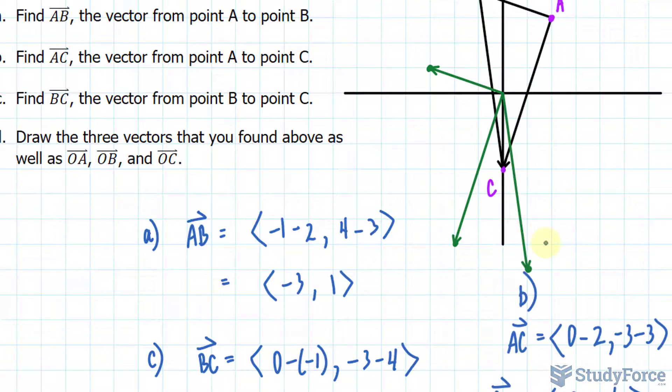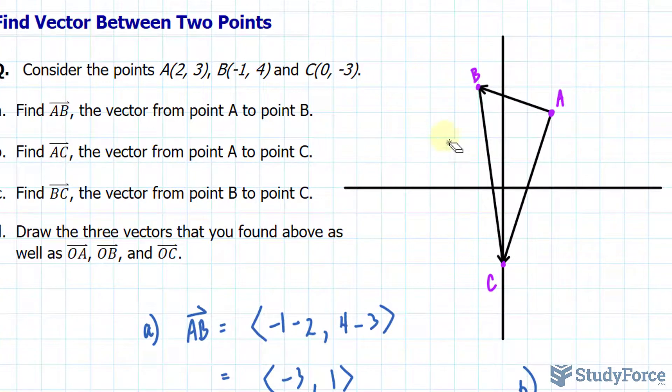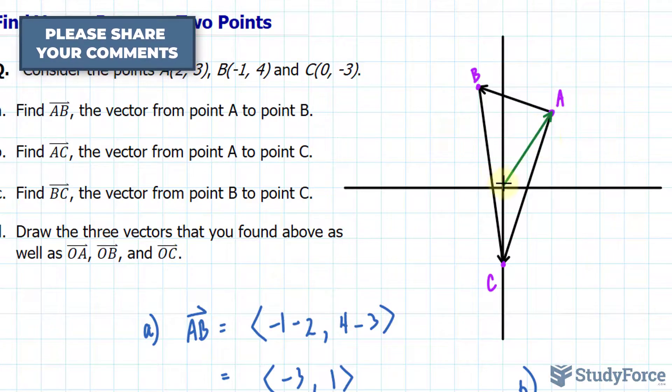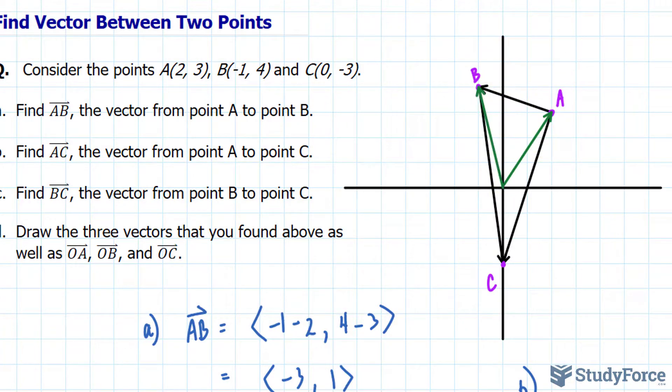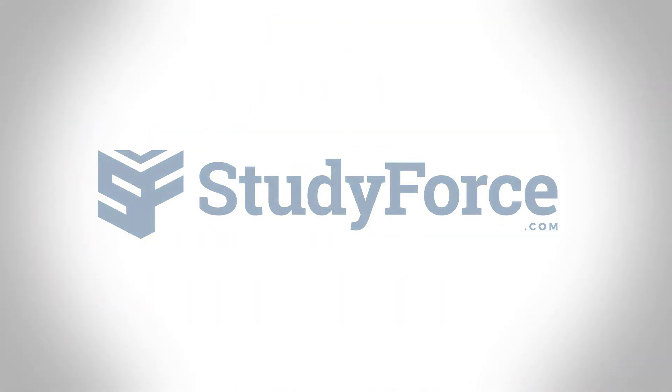There it is. So let me go ahead and erase those to prepare for question D, which says draw the three vectors that you found above. And I've done that already. Notice that we have these black arrows that represent those vectors. As well as three other vectors that go from the O to A. O represents origin. So I will do that first one. O to A is right there. O to B is over here. And O to C is that one. And there you have it. Now you know how to find vectors between two points.